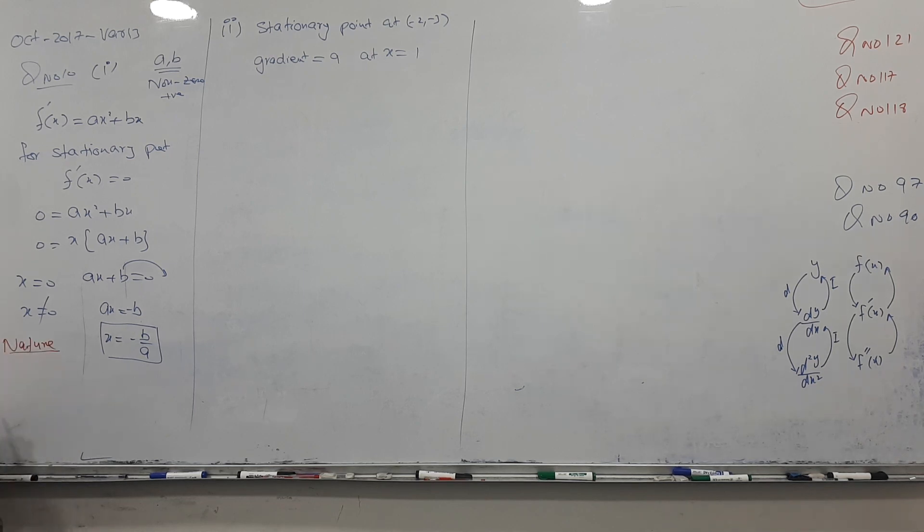So for nature I will go second differentiation. Second derivative is what, 2 comes down, power 1 less, and this b becomes, bx becomes b only. So when I put this x value there, like I'm finding nature at minus b by a, so 2 times, in the place of x replace this value minus b by a and plus b. A cancel, minus 2b plus b, and I am getting negative answer, and you know negative means what, point of maxima.